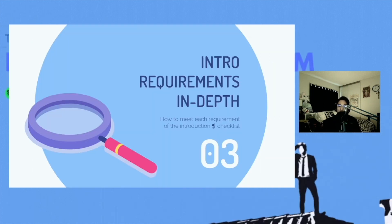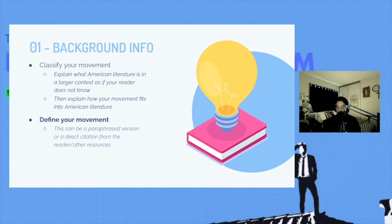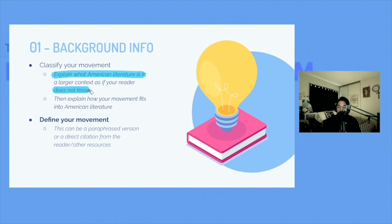So how do we meet each of these requirements of the introduction checklist? So for background information, to reiterate, you're going to be classifying your movement. Explain what American literature is in a larger context, as if your reader does not know.